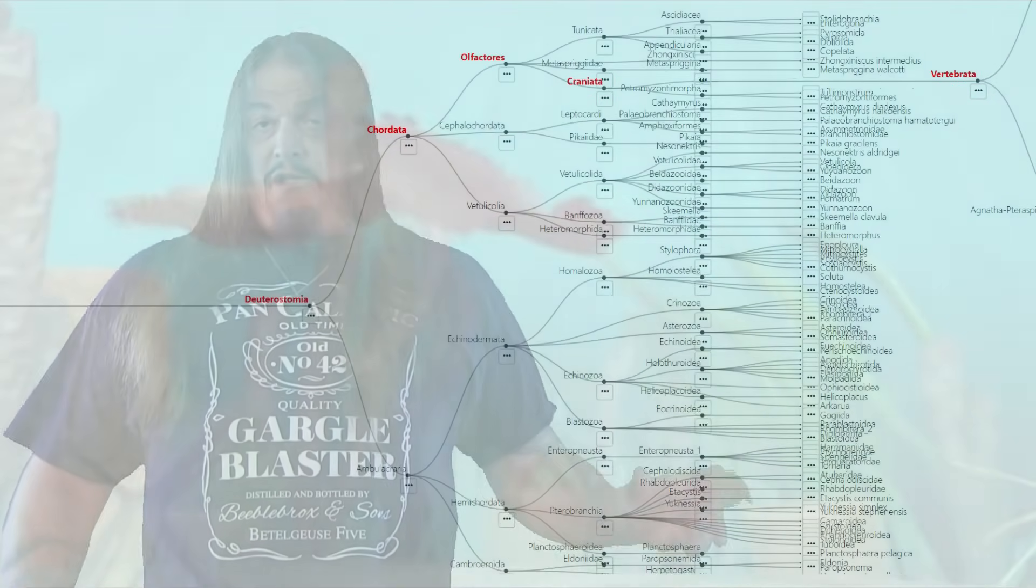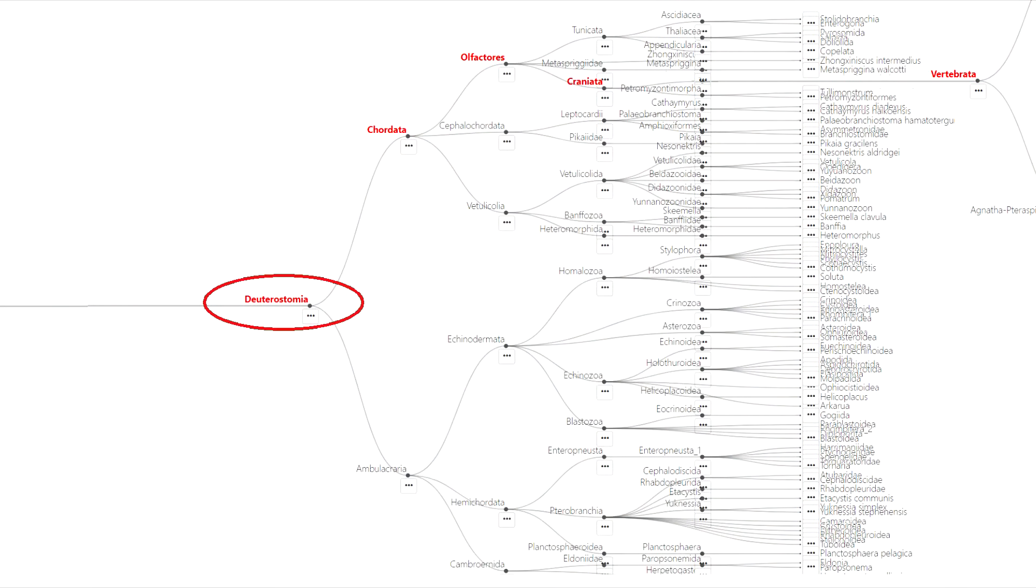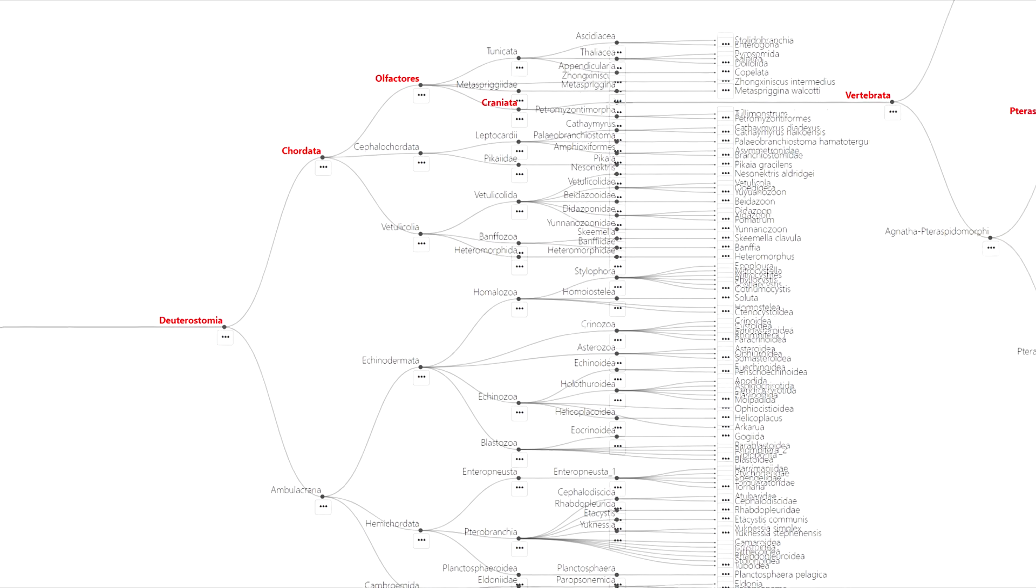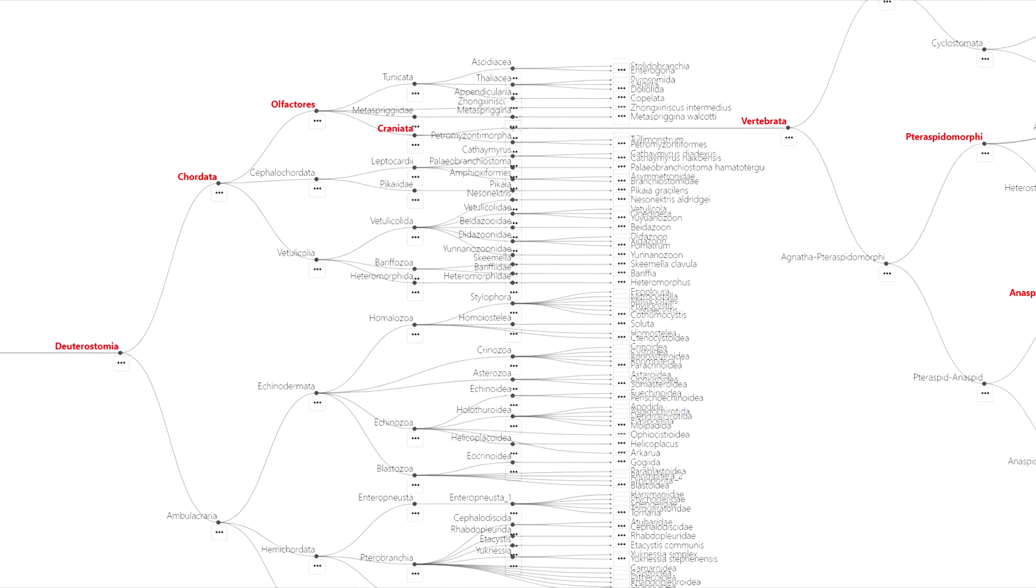And during that 55 million year explosion, one lineage of bilaterally symmetrical animals developed a flexible notochord running parallel to a central nerve cord along the oral to anal axis, front to back. One of the daughter sets of that group also began developing a cartilaginous cranium, and one of their daughter sets further extended that into spinal vertebrae. So by the end of the Cambrian period, we had the first true fish.